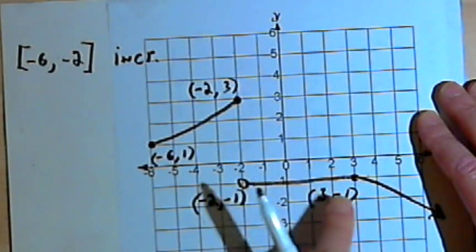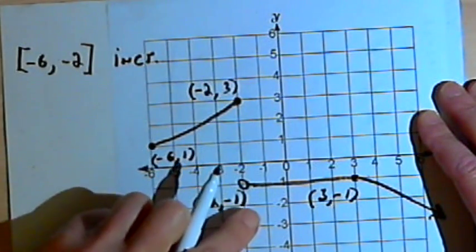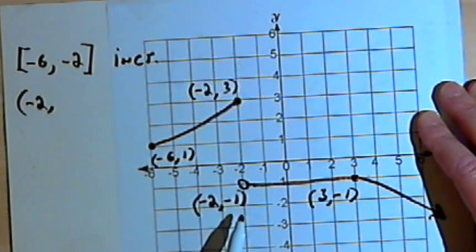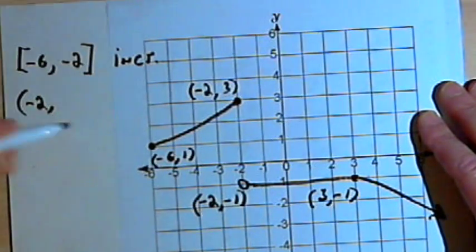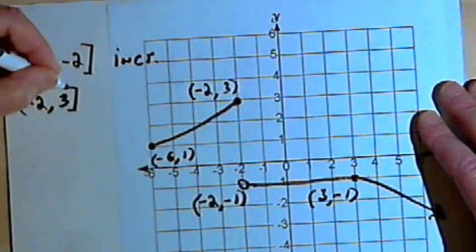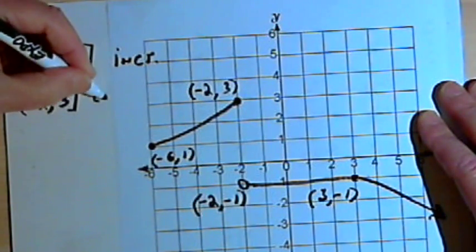The next interval is a constant one. It begins just after negative 2, so I'll use a round parenthesis for that. And it continues over to positive 3, including positive 3. So that's where it's constant.